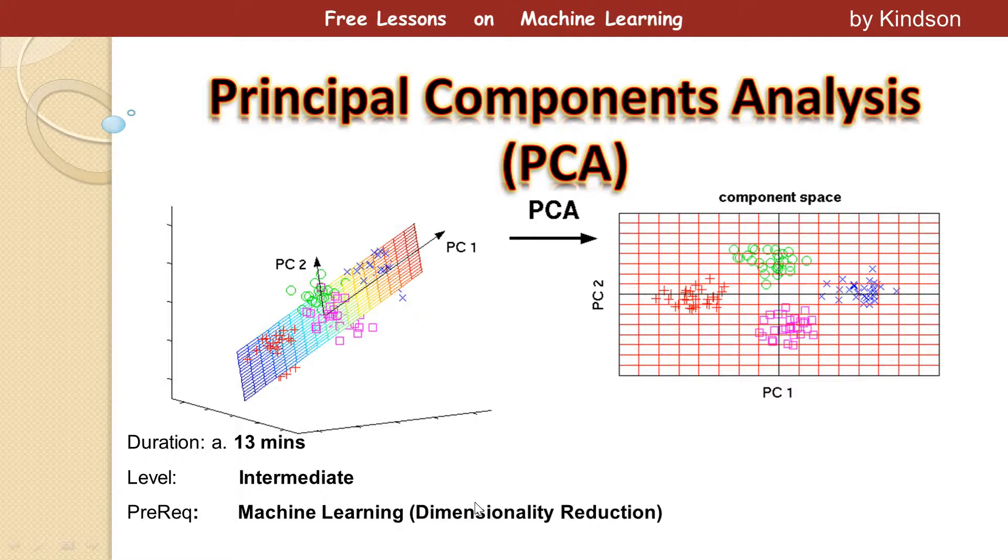Added to that, principal component analysis is under dimensionality reduction, which has to do with reducing dimension of data from high dimension to low dimension. Okay, having said that, let's actually get started with what we are discussing.